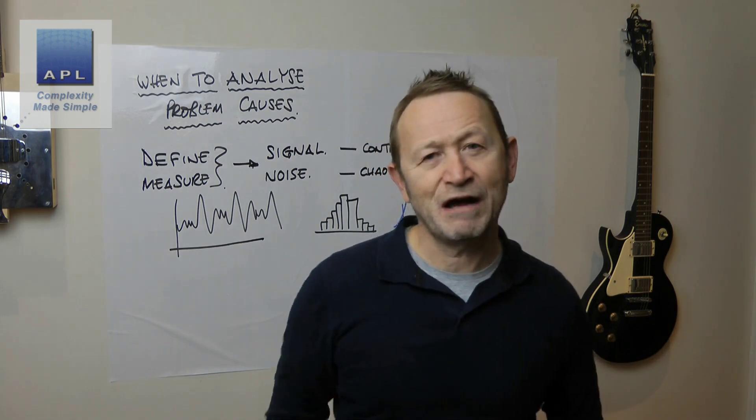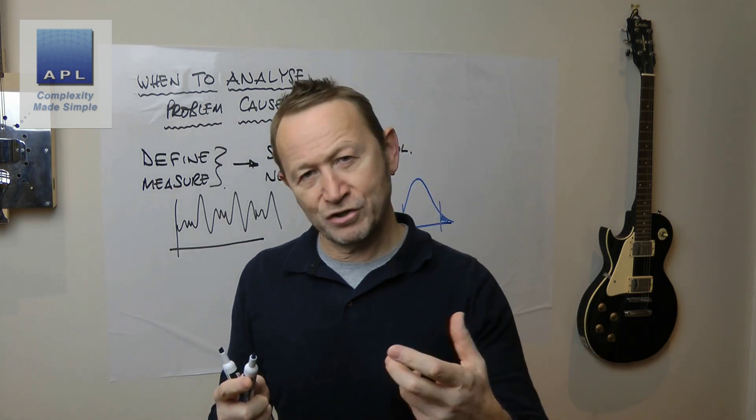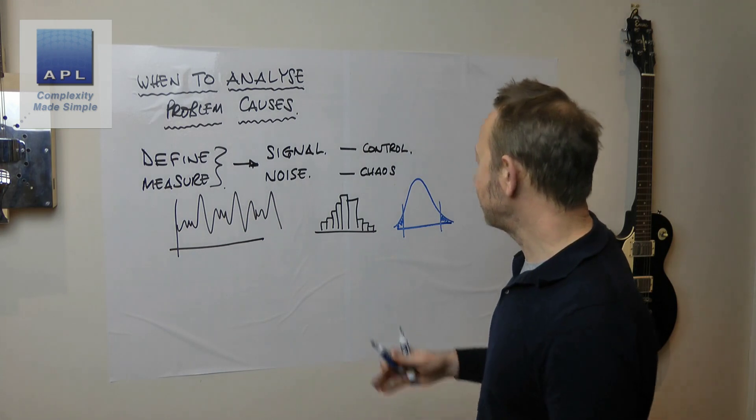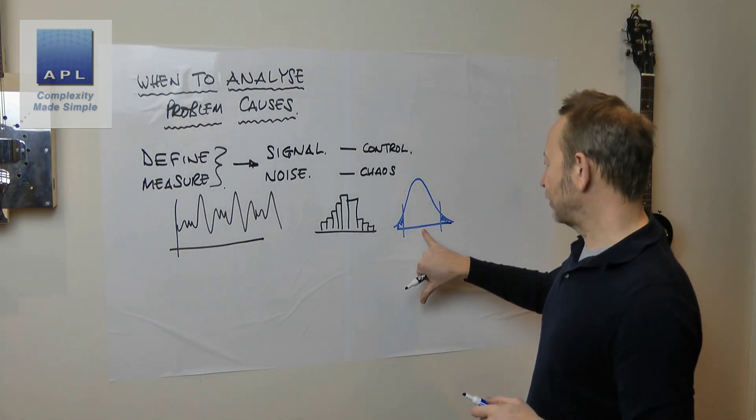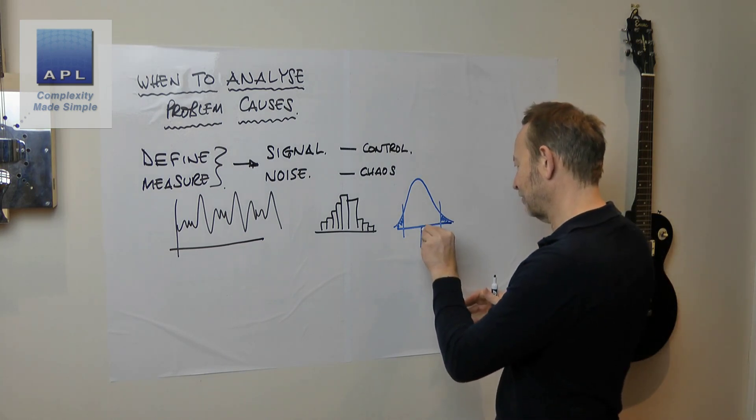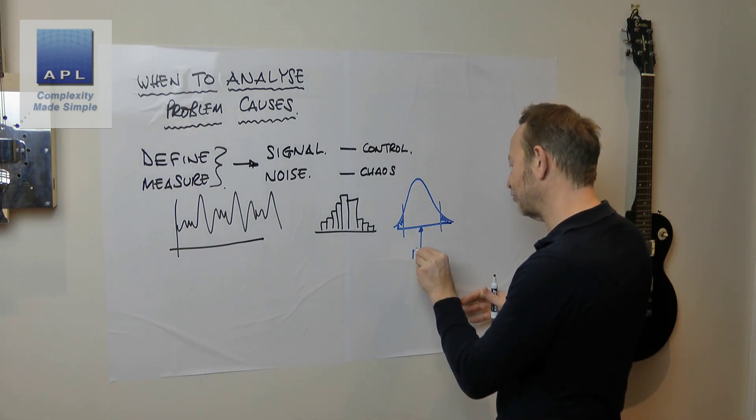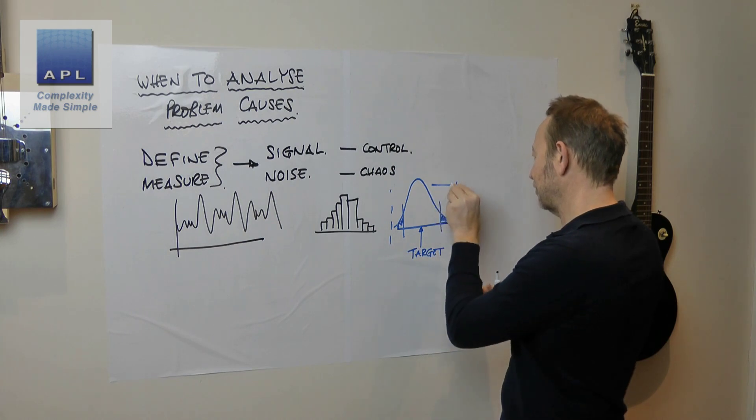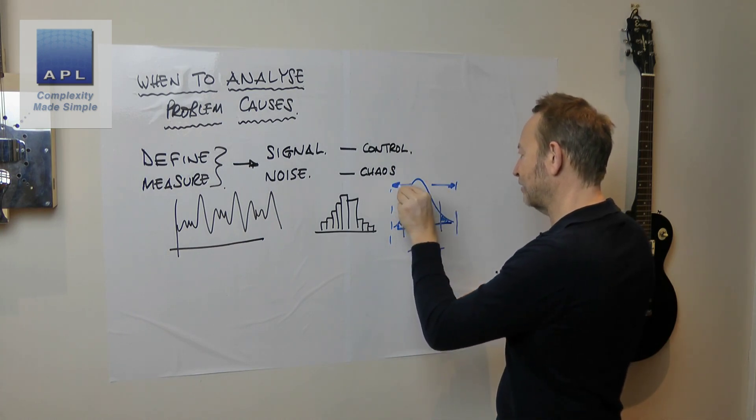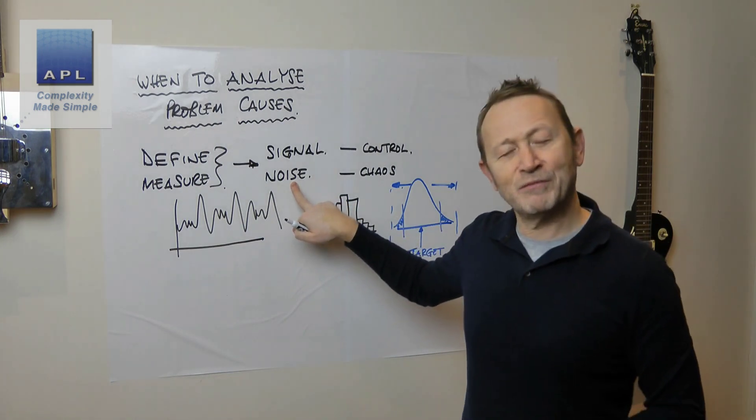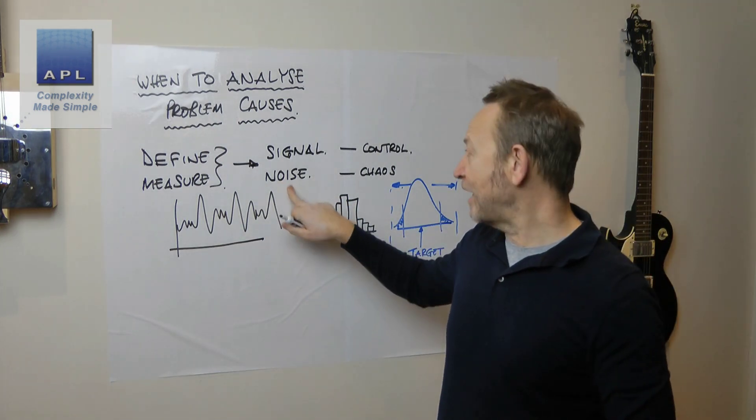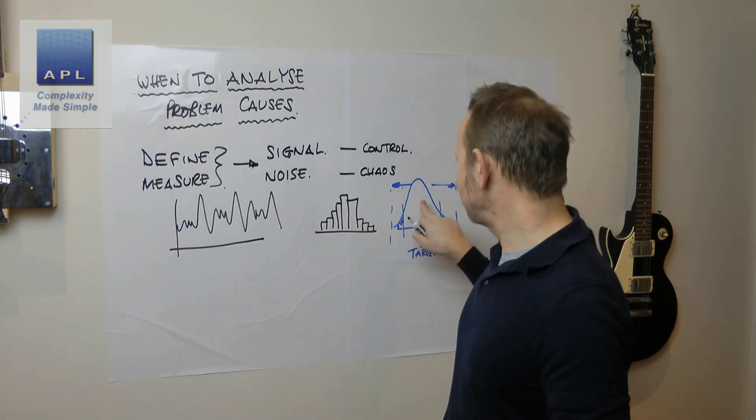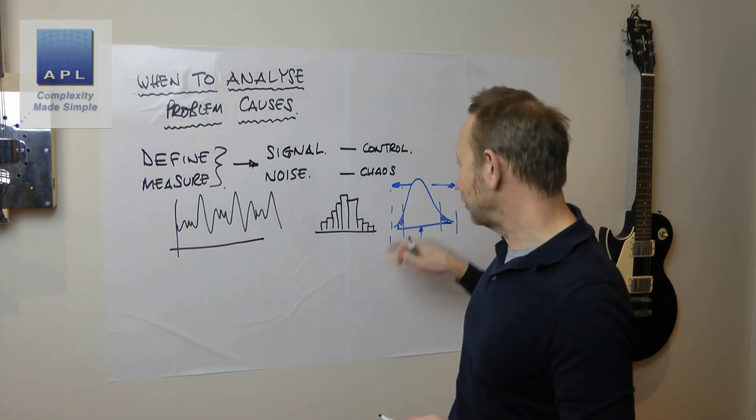I've got a problem with signal. Have I got a problem with the noise? So what's the difference? Well, this one, for instance, look, this process is perfectly centered. The average is perfectly hitting the target. What we have a problem with is the fact that it is spread too much. That is a problem of noise. That's a problem of noise. Now, this has a particular way to answer it. So that's a problem with noise.